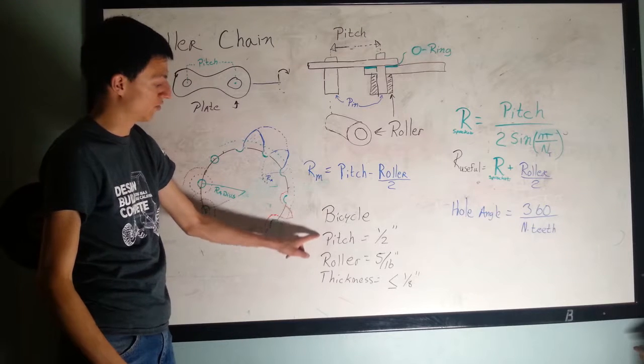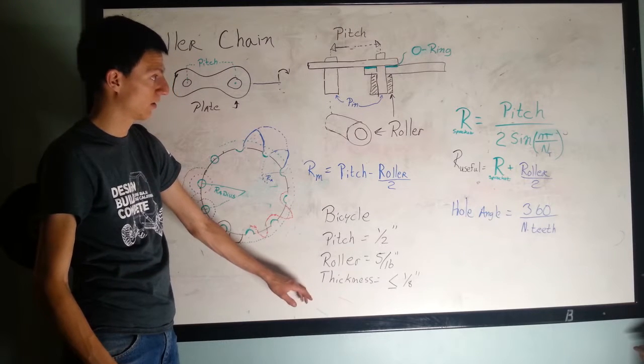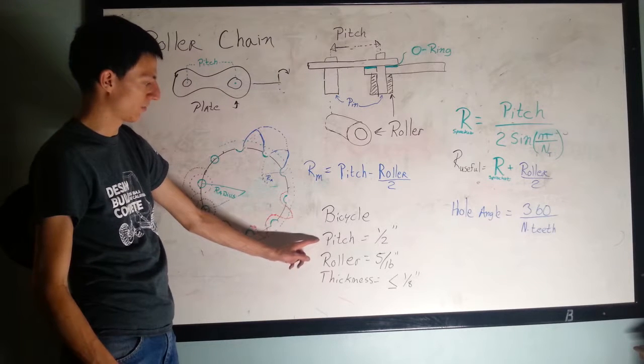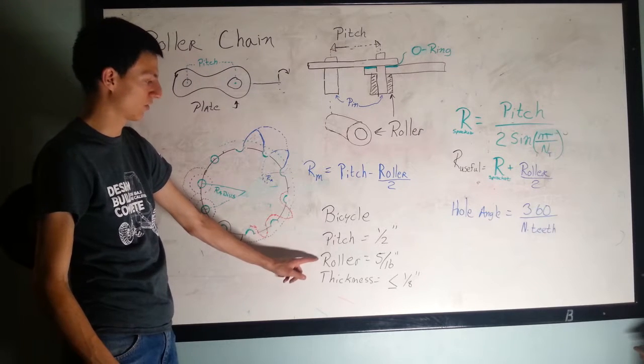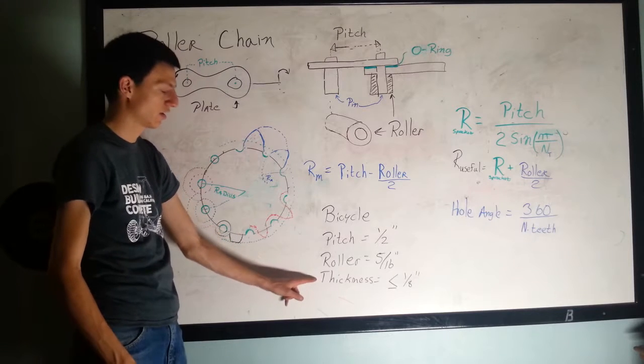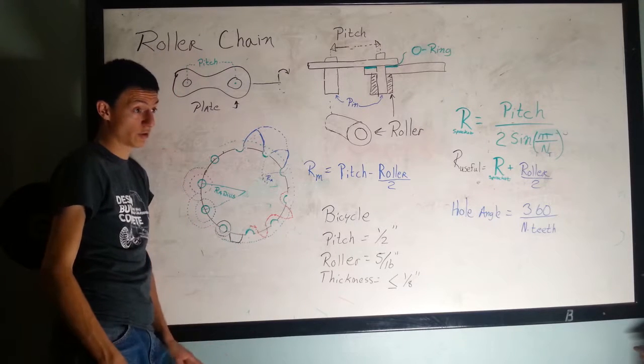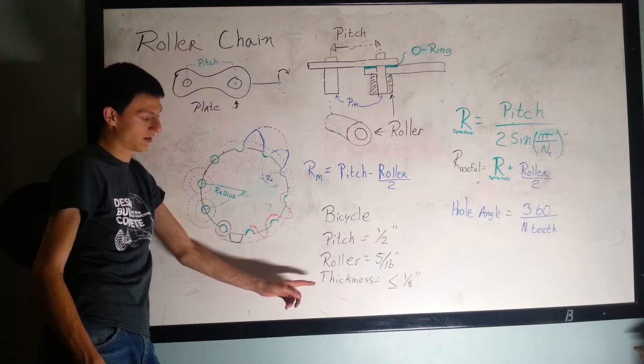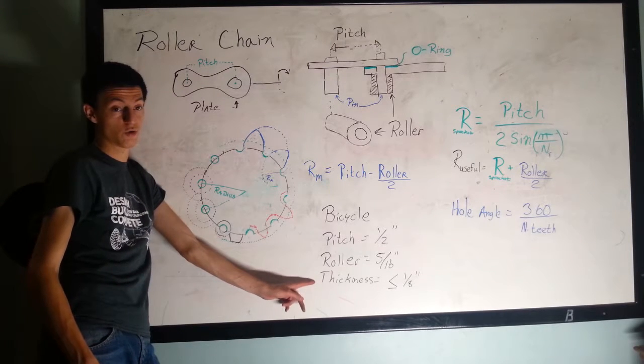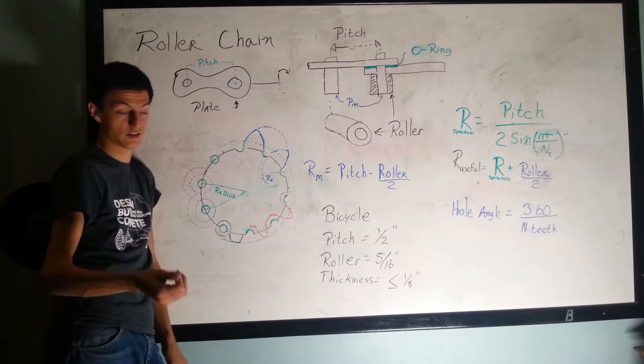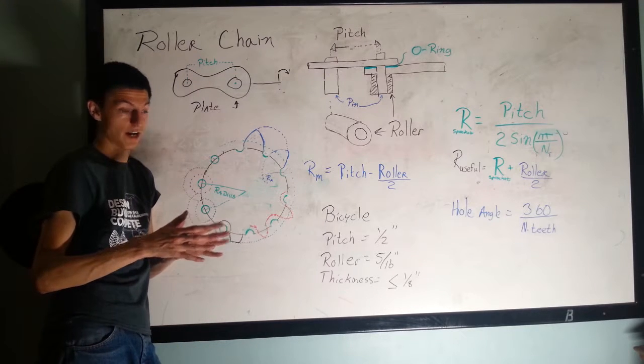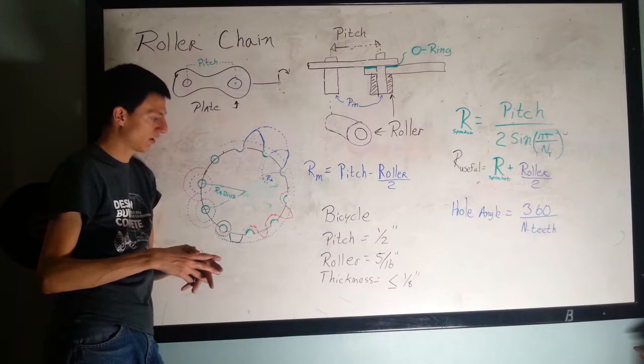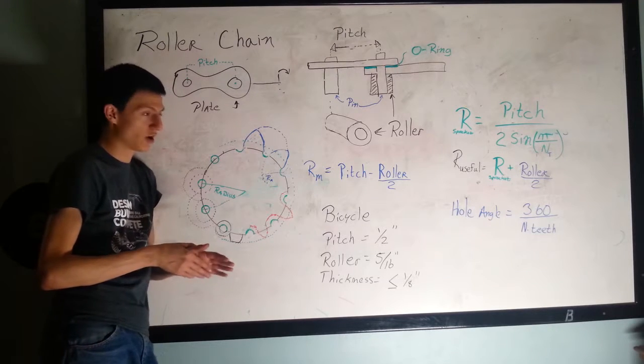If you want to try making bicycle chain, the pitch for bike chain is a half inch, the roller is 5/16, the thickness for most bike chain like BMX bikes is an eighth inch or less. You can make them a little thinner so they fit right.